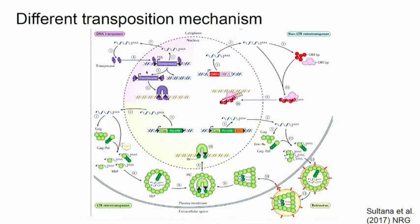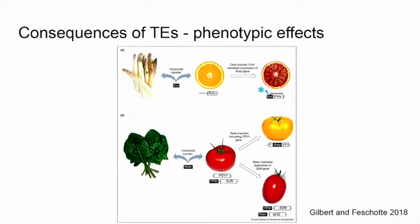What does having an RNA intermediate mean? You also have a higher mutation rate. So there are many different mechanisms and many different flavors.